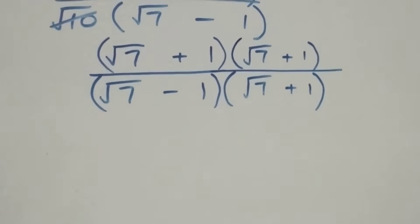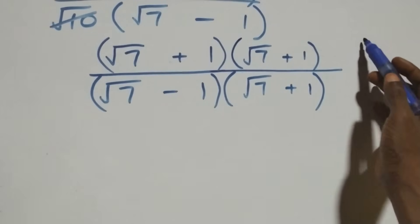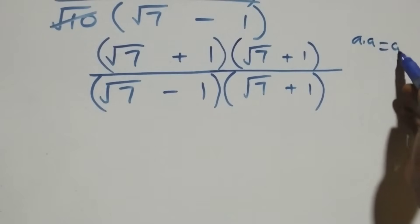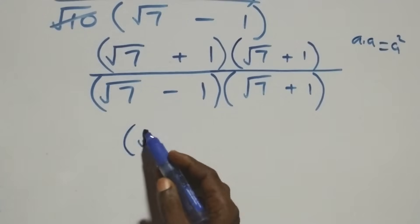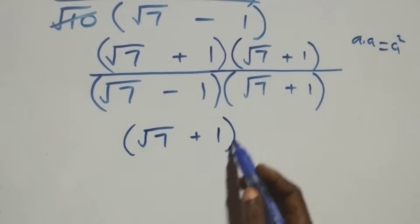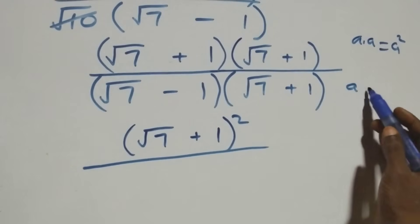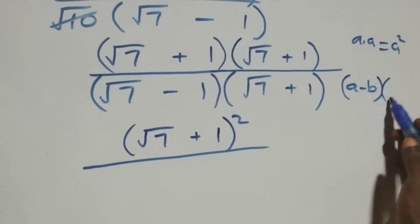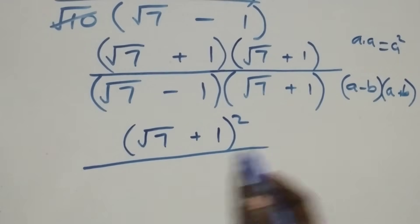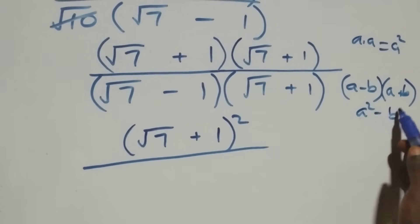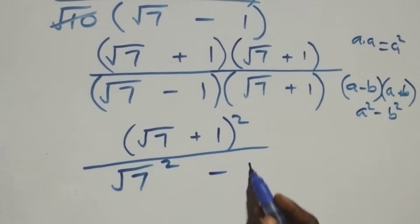In the numerator, multiplying (√7 + 1) by (√7 + 1) gives (√7 + 1) squared. In the denominator, we apply the identity (a − b)(a + b) = a² − b², giving us √7 squared minus 1 squared.